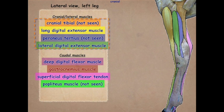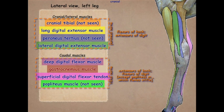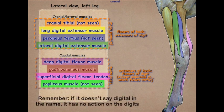These cranial lateral muscles, innervated by the peroneal nerve, are going to be flexors of the hock and extensors of the digit. Remember in the front limb, the extensors of the digit also extended the carpus. But in this case, because our flexion angle is opposite in the tarsus, the extensors of the digit are going to flex the hock. Likewise, in the caudal muscles, innervated by the tibial nerve, we're going to have extensors of the hock and flexors of the digit, except for the popliteus, which is going to flex the stifle. Remember, it doesn't say digital in the name — it has no action on the digits.